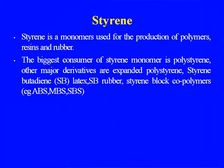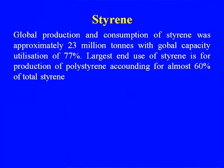Any styrene plant is a combination of ethyl benzene production followed by styrene manufacture. Styrene is a monomer used for production of polymers, resins, and rubber. The biggest consumer of styrene monomer is polystyrene. Other major derivatives include expanded polystyrene, styrene butadiene latex, styrene butadiene rubber, and styrene block copolymers including ABS, MBS, and SBS. Global production and consumption of styrene was approximately 23 million tons with global capacity utilization of 77 percent. Almost 60 percent of total styrene goes to polystyrene production.